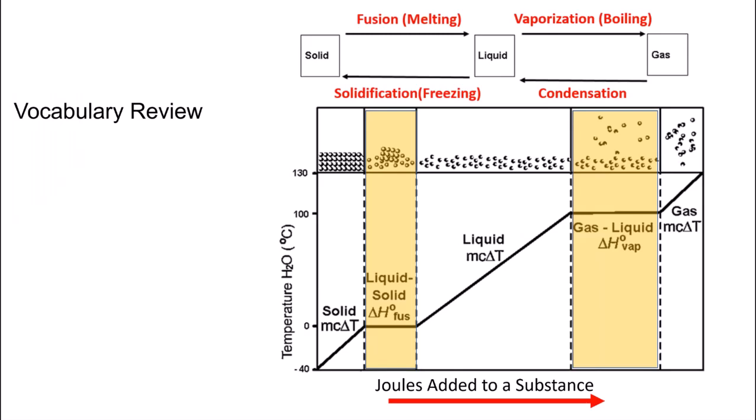Let's do a quick vocabulary review. As we heat a substance, first it melts, which we call fusion, and then it boils, which we call vaporization. As we begin to cool it, then we have delta H of condensation, and we have delta H of solidification.